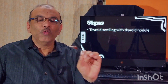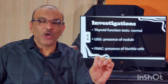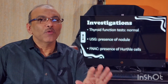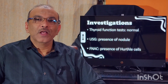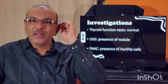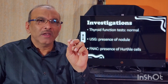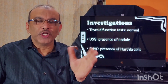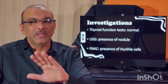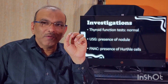On examination, as mentioned, there will be a small nodule. To arrive at a diagnosis, we start with thyroid function tests — T3, T4, and TSH — which will come back as normal. This is followed by ultrasonography of the neck, where the nodule can be seen.